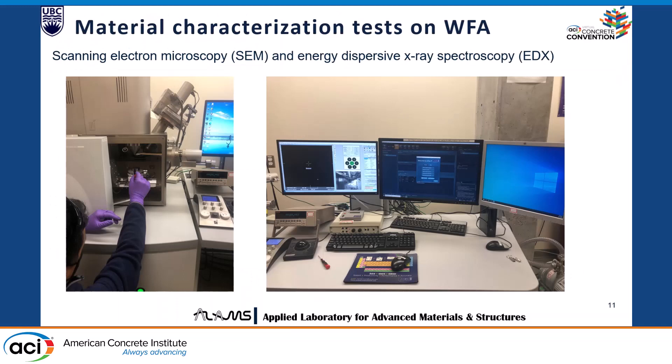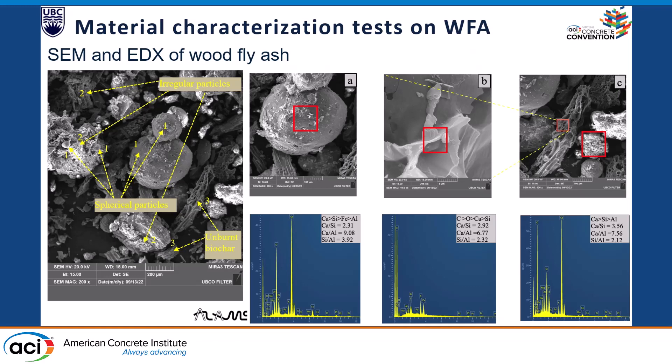We did scanning electron microscopy and EDX on the wood ash. From the microscopic image on the left, magnified 200 times, we identified three types of particles. The spherical ones are marked as number one, with size variation from a couple of microns up to around 400 microns. There are also some irregular or fluffy shaped particles, and a significant amount of unburnt biochars, marked as number three.